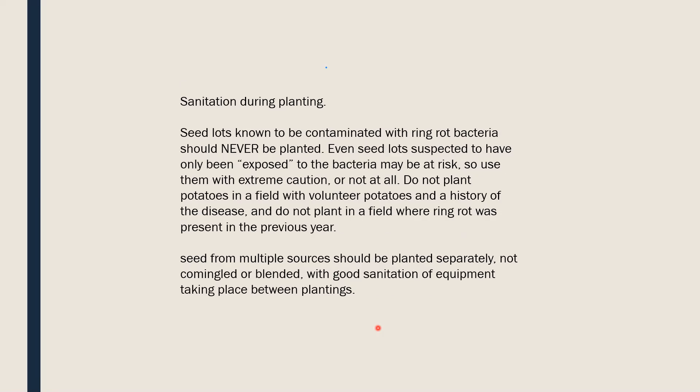Seed lots known to be contaminated with ring rot bacteria should never be planted — this is a basic rule. Do not plant potatoes in a field with volunteer plants and a history of the disease. If there was an infection in a field, leave a gap of at least 2 years before planting again. Seeds from multiple sources should be planted separately and not commingled or blended, with good sanitation of equipment taking place between plantings.